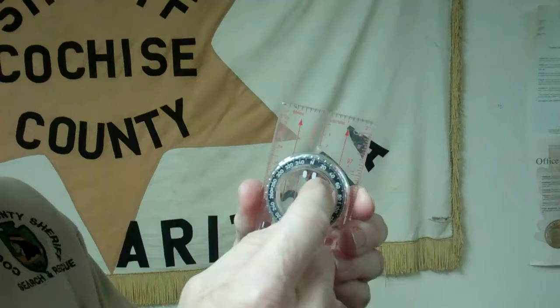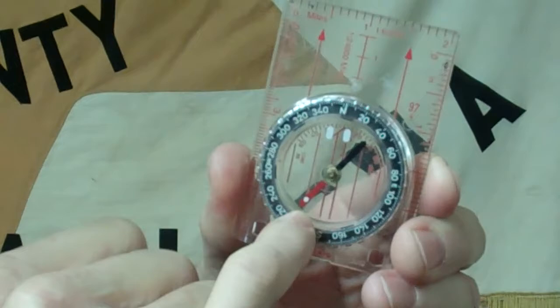So the primary feature on any compass is the magnetic north needle. The magnetic north needle here is represented by the red part with the white dot.